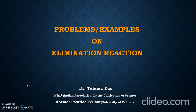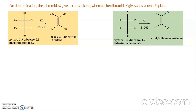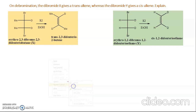Hello everyone. In this video we will discuss some problems or examples regarding elimination reactions. The first problem is on bromination: the dibromide X gives a trans alkyne, but from dibromide Y we are getting a cis alkyne.